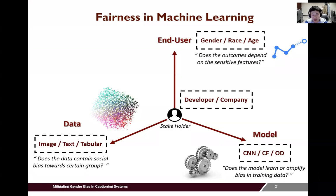Fairness in machine learning has become a hard research topic in recent years. In machine learning, a given algorithm is said to be fair if its results are independent of given variables, especially those considered sensitive, such as gender and race.